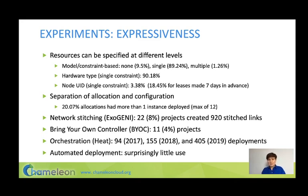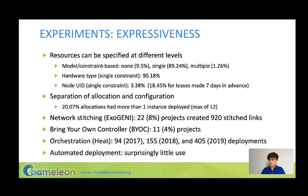The second decision was to separate the process of allocation and configuration. In a commercial cloud, if you deploy an instance and want to change the image, you deploy another instance. In Chameleon, we anticipate users will make an allocation and then change instances often — for example, to do a performance study over various configurations. That turned out to be right on the money: 20% of allocations had more than one instance deployed on them. We also provide support for network switching and 'bring your own controller,' allowing you to allocate and configure your own network switch, and some proportion of projects use these capabilities.